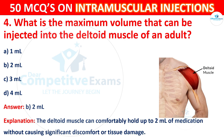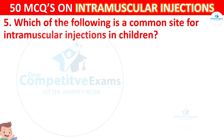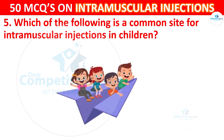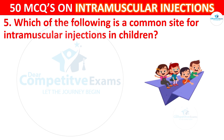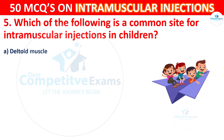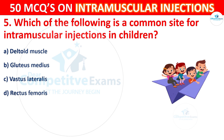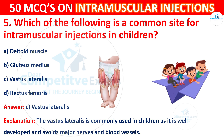Question 5: Which of the following is the common site for intramuscular injection in children? Options are: deltoid muscle, gluteus medius, vastus lateralis, or rectus femoris. The correct answer is C, vastus lateralis. The vastus lateralis is commonly used in children as it is well developed and avoids major nerves and blood vessels.